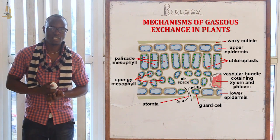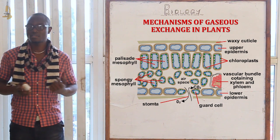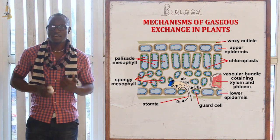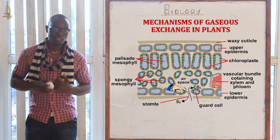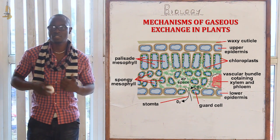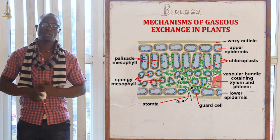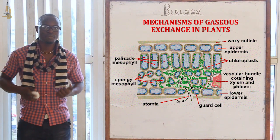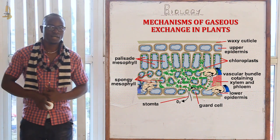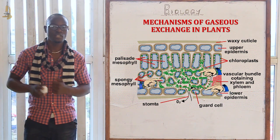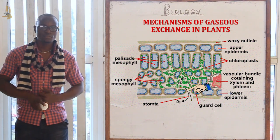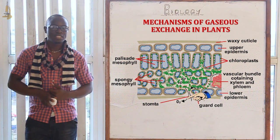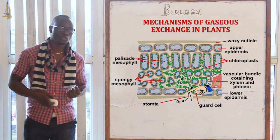Regarding the mechanism of gaseous exchange in plants: when the stomata opens, carbon dioxide from the atmosphere diffuses into the substomatal air spaces. From there it moves to the intercellular spaces in the spongy mesophyll, where it goes into solution form and diffuses into the cytoplasm. A concentration gradient is maintained between the cytoplasm and the intercellular space, driving carbon dioxide into the cell. Oxygen produced during photosynthesis moves out of the cell into the intercellular air spaces, then to the substomatal air chambers, and diffuses out through the stomata.